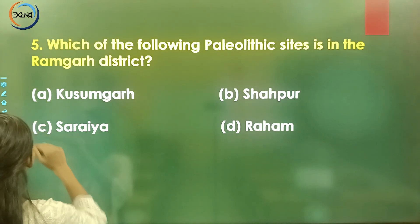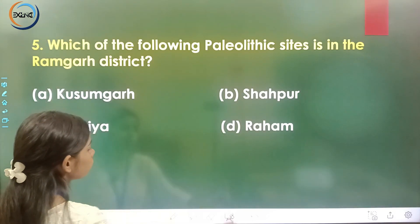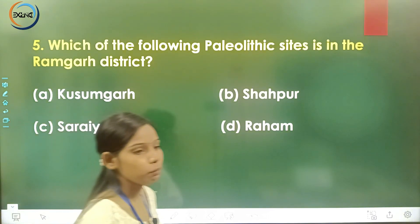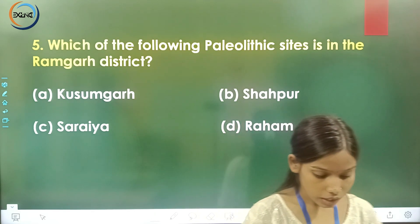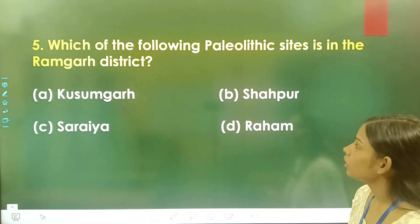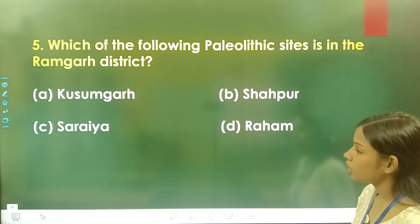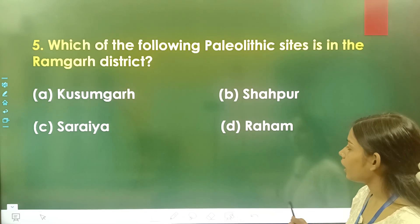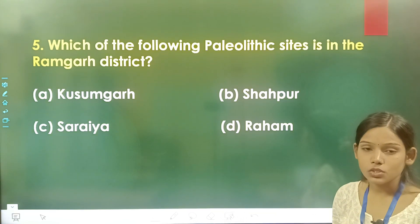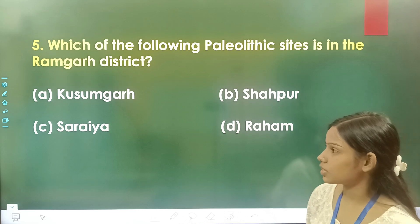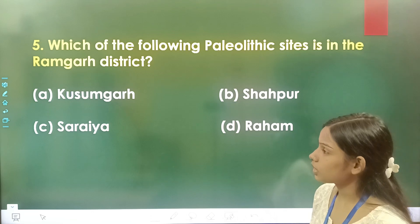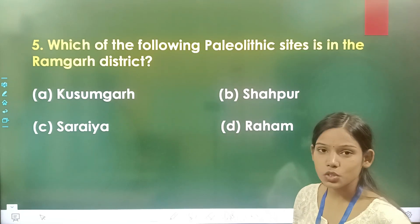Question number 5: Which of the following Paleolithic sites is in the Ramgarh district? Option A is Kusumgad, option B is Shahapur, option C is Saraiya, and option D is Raham. Students, comment your answer in the comment box. The correct answer is option A, Kusumgad.